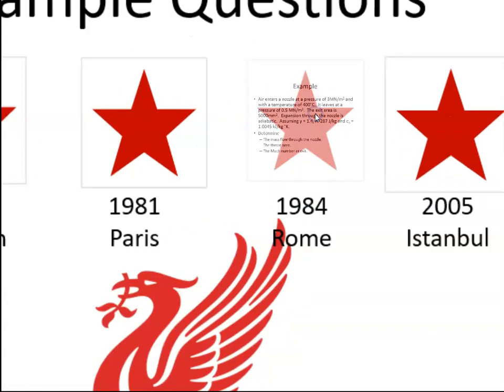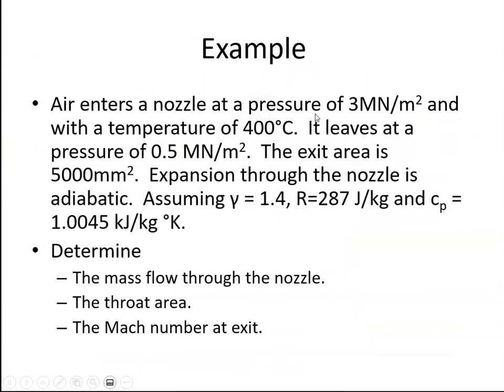For another example, air enters a nozzle at a pressure of 3 MN/m² and with a temperature of 400°C. It leaves at a pressure of 0.5 MN/m². The exit area is 5000 mm². Expansion through the nozzle is adiabatic, assuming gamma is 1.4, the universal gas constant is 287, and the specific heat capacity at constant pressure is 1.0045 kJ/kg·K.